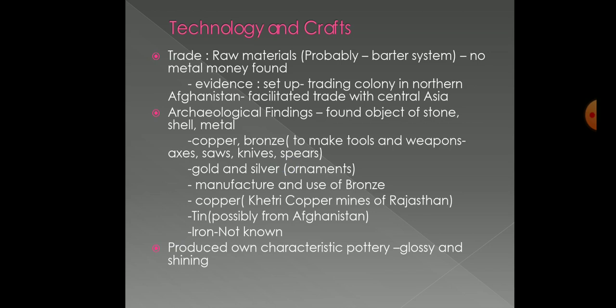They knew the manufacture and use of bronze. Copper was obtained from Khetri copper mines of Rajasthan, and tin was possibly obtained from Afghanistan. Importantly, they did not know the use of iron. Their characteristic pottery was produced using the potter's wheel and was very glossy and shiny.